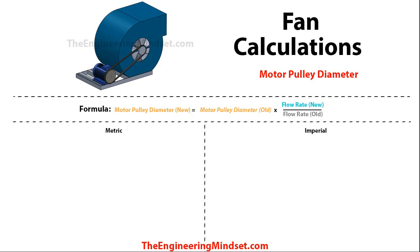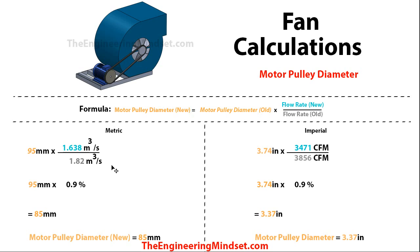Another way to do this — if we know there has been a change in the flow rate and we need to know what the change in diameter for the pulley will be on the motor — we can use this formula: the new pulley diameter is equal to the old motor pulley diameter multiplied by the new airflow rate divided by the old airflow rate. We know the old airflow rate and the diameter of the pulley, and this is the new airflow rate. Dropping these numbers in, we can see that the original pulley diameter multiplied by that ratio equals 85 millimeters, or 3.73 inches. That's the new motor pulley diameter.